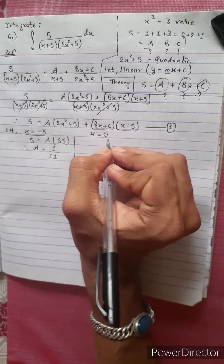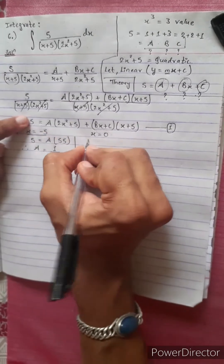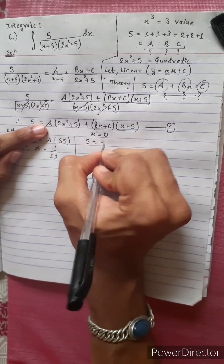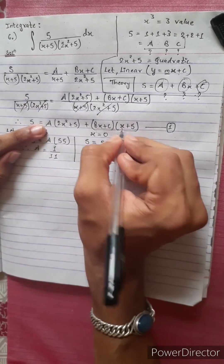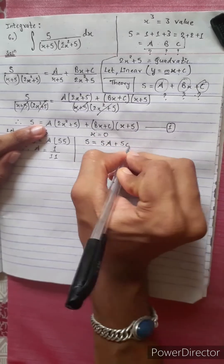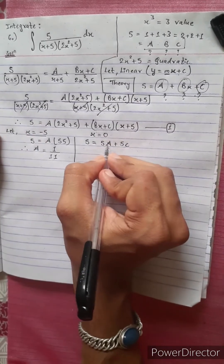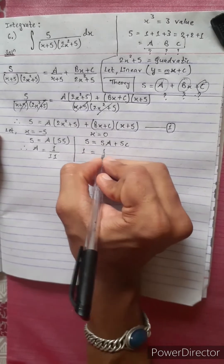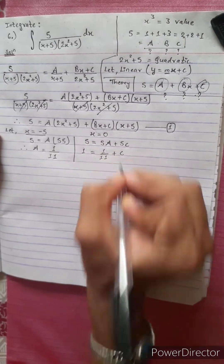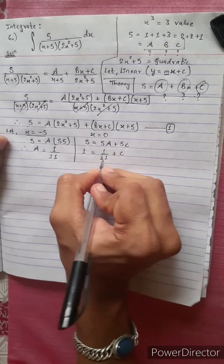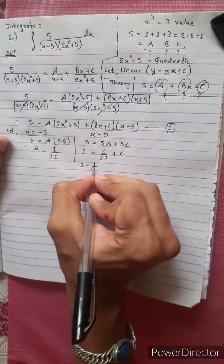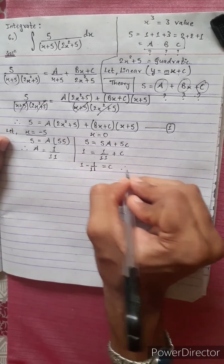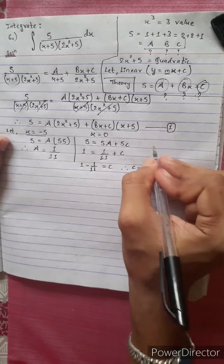Let x equals 0. Then 5 equals 5A plus B times 0 plus C times 5, giving 5 equals 5A plus 5C. Since A equals 1 by 11, we get 1 equals 1 by 11 plus C, therefore C equals 1 minus 1 by 11, so C value is 10 by 11.